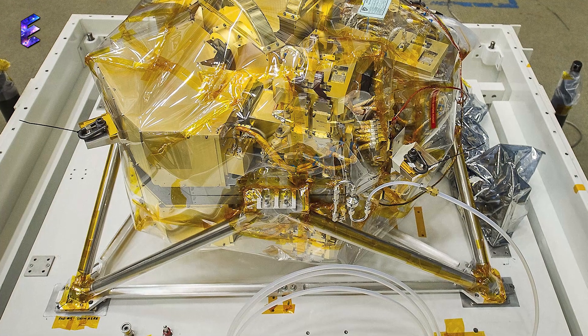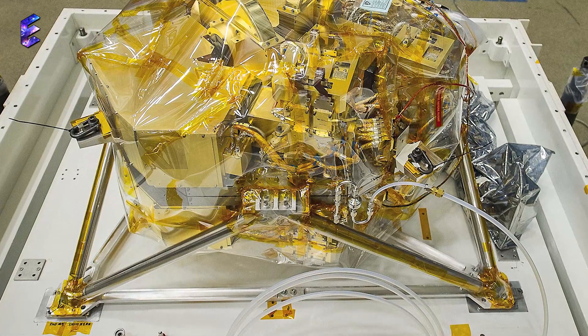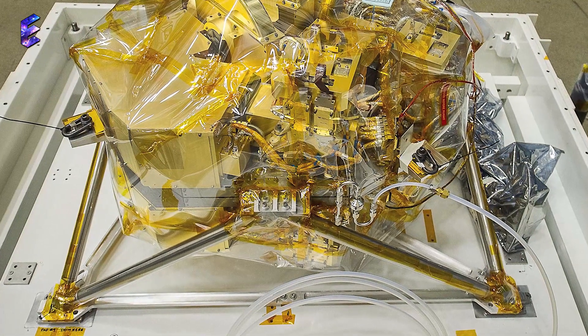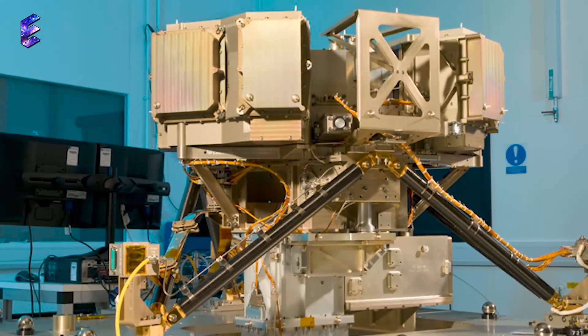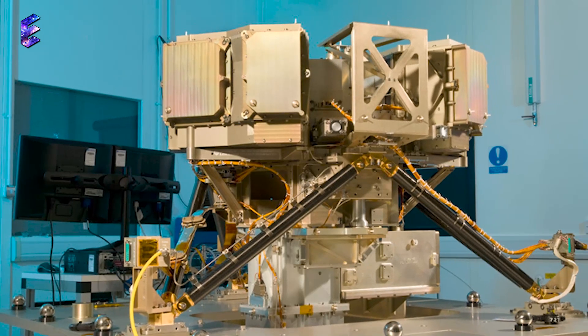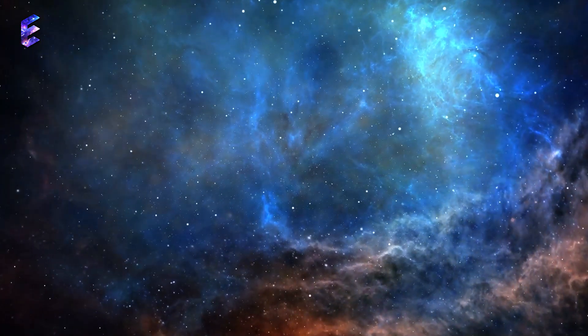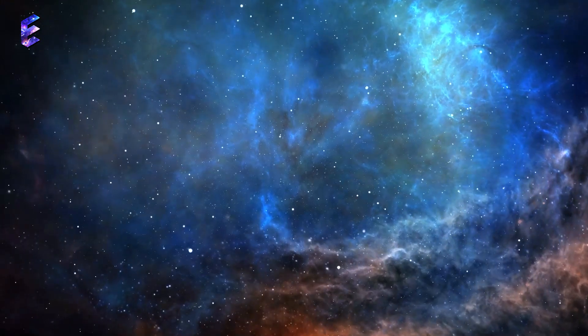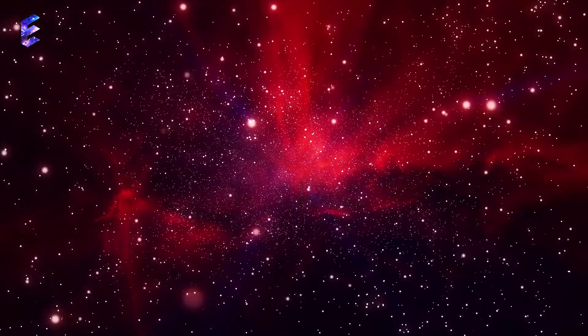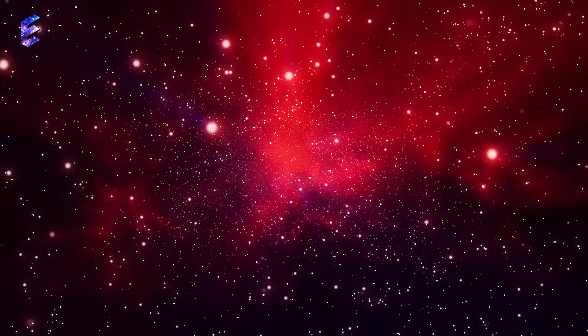Two instruments of Webb were used for the purpose: the NIRCam, the Near-Infrared Camera, and the MIRI, the Mid-Infrared Instrument. As their name suggests, the NIRCam captures images in the near-infrared wavelength, while the MIRI has filters which click images within the mid-infrared band.